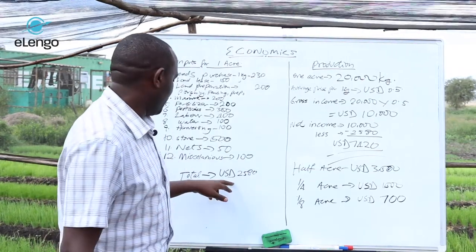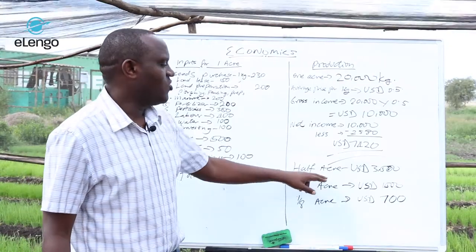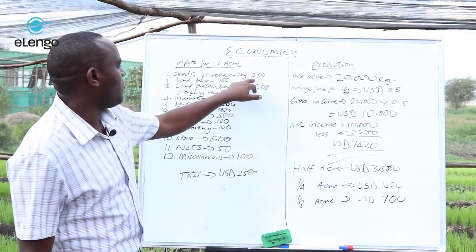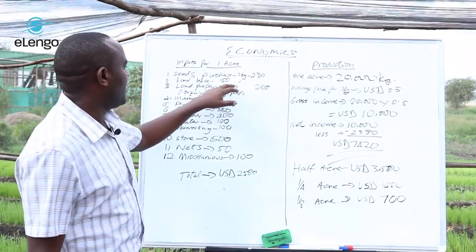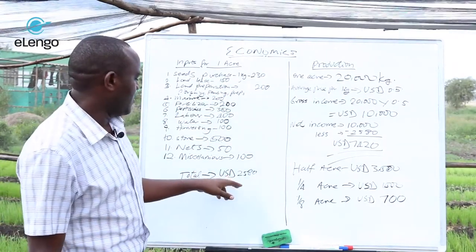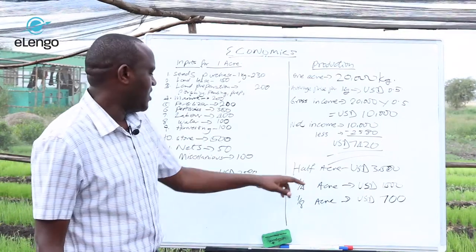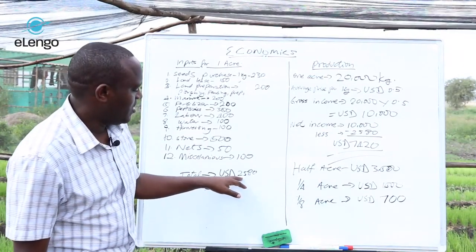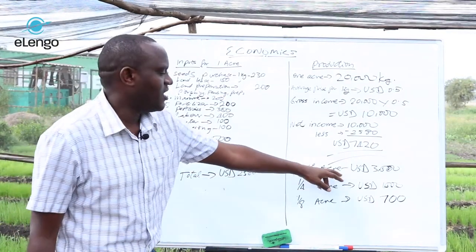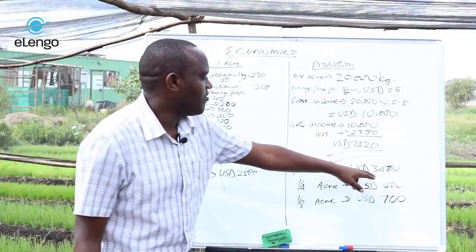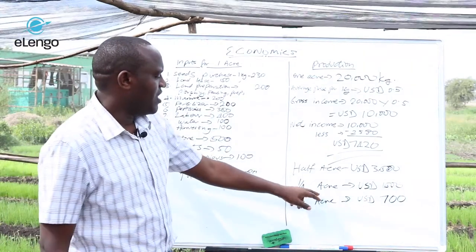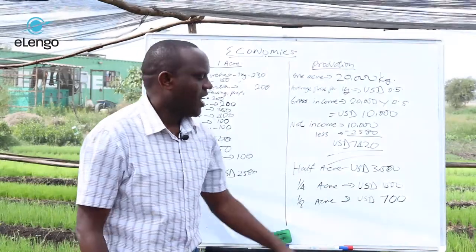Even if you do half an acre, the costs will also be less — you are going to use half of the land lease and other costs. You may find that for half an acre, you use around $1,500 US dollars for the input. So getting that gross income is still significant and you still get good profit. The same logic applies to a quarter of an acre at that price.